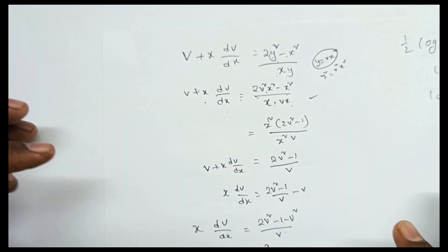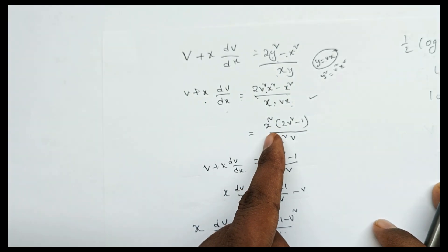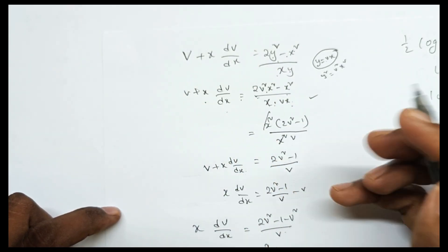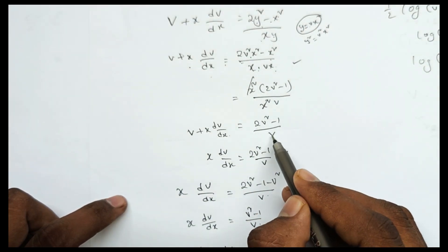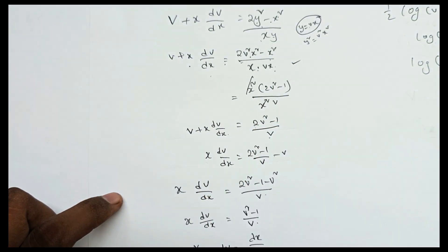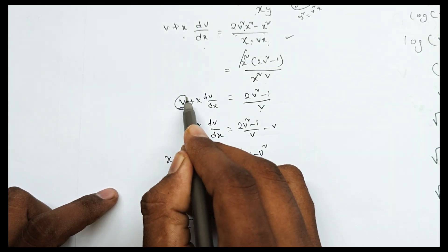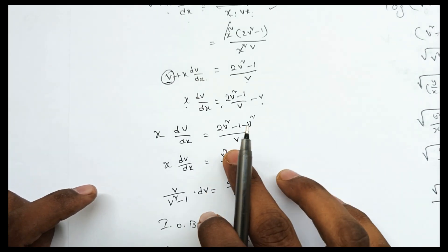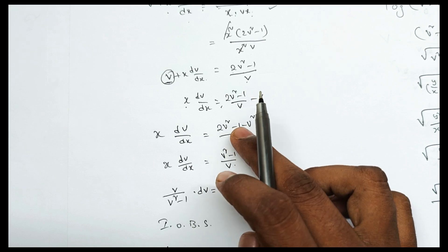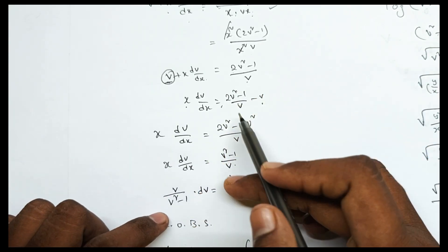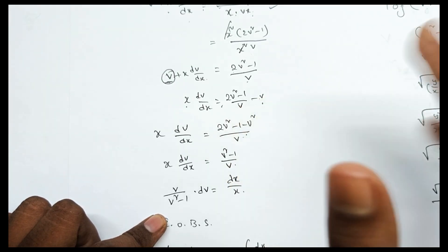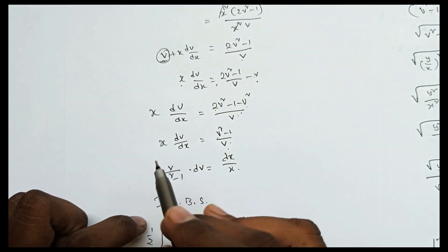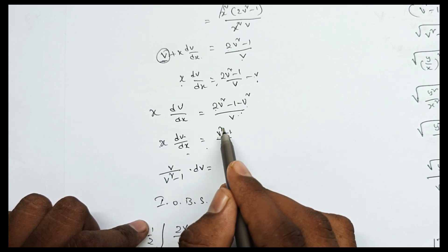After substitution, the value: 2v squared minus 1 by v. The x squared terms cancel. So v plus x dv by dx equals 2v squared minus 1 by v. Therefore x dv by dx equals 2v squared minus 1 by v minus v. Taking LCM: v squared minus 1 minus v squared equals v squared minus 1 by v. So x dv by dx equals v squared minus 1 by v.